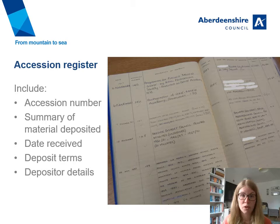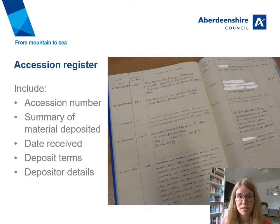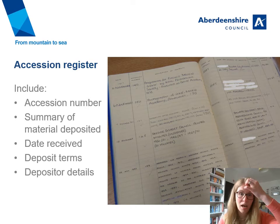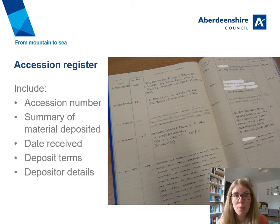All of this information should be recorded in an accession register, and that means you've got a record of everything in your collections — where it's come from and what your rights are relating to it. This is sort of the bible of the collections because you might not have time to catalogue everything instantly, so this will keep you right with what you've got at any one time. It can be electronic or on paper — we now have an electronic cataloguing system including an accession database, but we used to have a paper record, so this is an image of our old paper register.